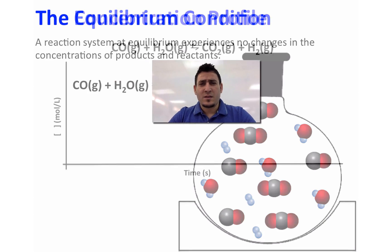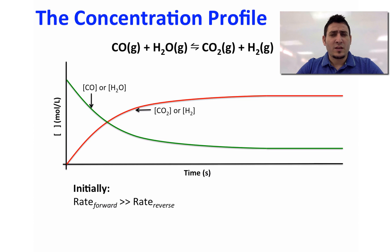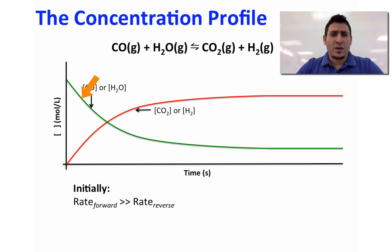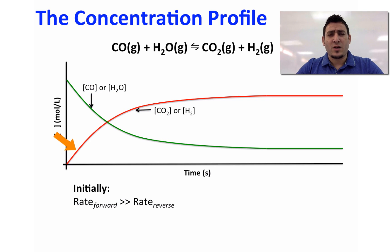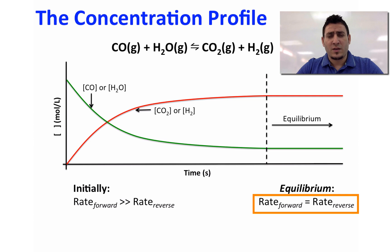Therefore the concentrations of the reactants and the products at equilibrium will not change. Looking at the concentration profile of this reaction, at the beginning the reaction rate between carbon monoxide and water is way faster than the reaction rate between carbon dioxide and water. So the concentration of carbon monoxide and water will decrease over time, and the concentration of carbon dioxide and hydrogen will increase over time until equilibrium is established where all concentrations are no longer changing.